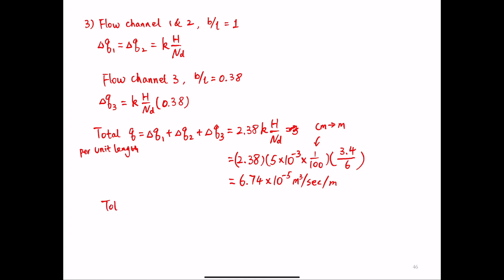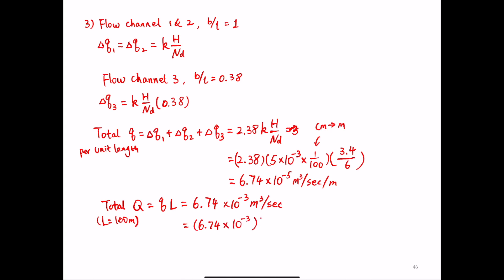The total seepage quantity capital Q for the entire length of the sheet piles — where L is 100 meters — is simply small q times L, giving 6.74 times 10 to the negative 3 cubic meters per second. Converting to cubic meters per day by multiplying by 24 hours times 3600 seconds per hour gives 582 cubic meters per day.